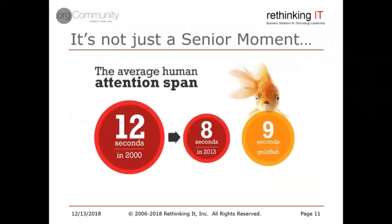Someone did a study that found in the year 2000, our attention span was 12 seconds. And in 2013, the latest data available, our attention span had dropped to eight seconds. Just as a comparison, the average goldfish has an attention span of nine seconds — don't ask me how they test that. The bottom line is you don't have a whole lot of time to get someone's attention.